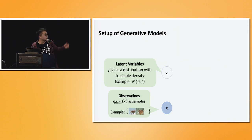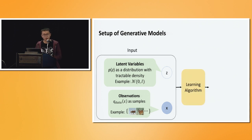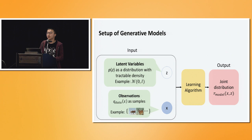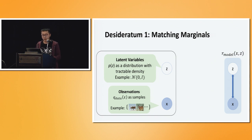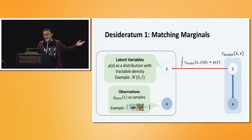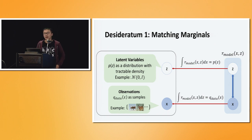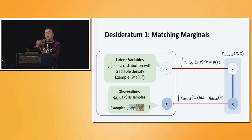We can think of these two distributions, p(z) on z and q_data on x, as two input marginal distributions. Our goal is to design some learning algorithm that takes these as input and produces a joint distribution over both x and z. The requirement is that this joint distribution matches our provided input — we call this matching marginals. If we integrate out x, we agree with our provided prior p(z), and if we integrate out z, we agree with q_data of x. If we do this, the joint distribution will have a latent variable consistent with our prior and will draw samples similar to our dataset.